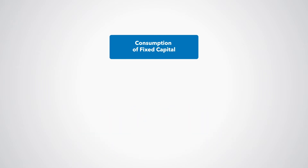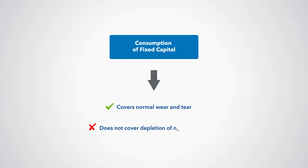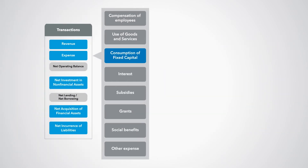Remember that consumption of fixed capital only covers the normal and expected wear and tear of fixed assets and their expected obsolescence. It does not cover the depletion of natural assets. Consumption of fixed capital is a cost of using fixed assets in a production process that lowers the value of assets and is recorded in the GFS framework as an expense.